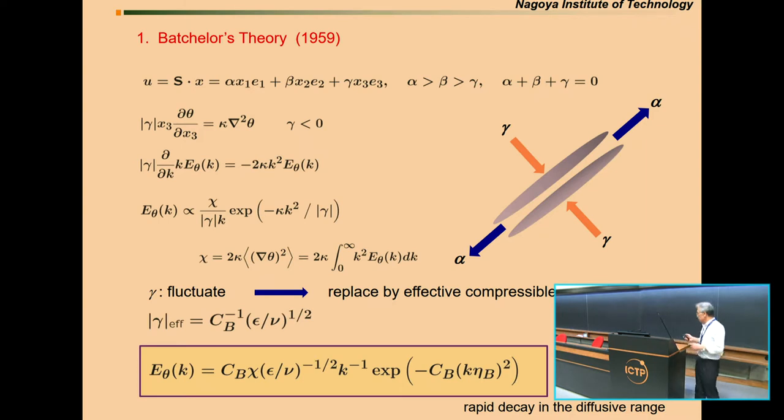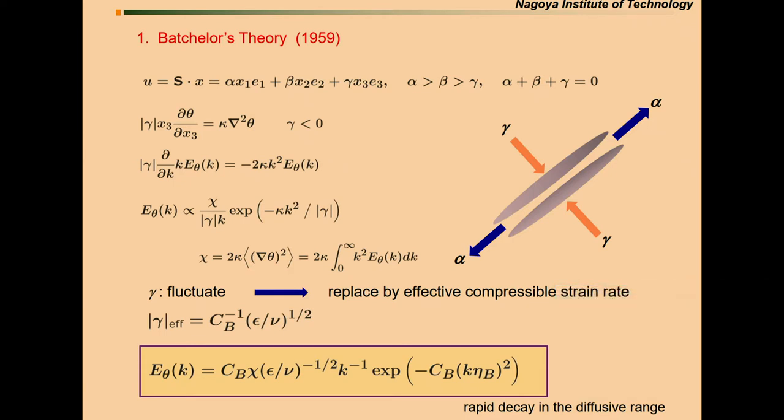Now, I explain in more detail the Batchelor theory. In his theory, in a local coordinate, each axis is parallel to the eigenvector. We suppose that the velocity field is squeezing. There is no pressure term for scalar. Therefore, scalar is easily squeezed into a small size. But, at some scales, diffusivity becomes to work. Therefore, Batchelor assumed the balance between squeezing term and diffusivity term. He obtained this equation for the scalar spectra. This equation is easily integrated to have this one.